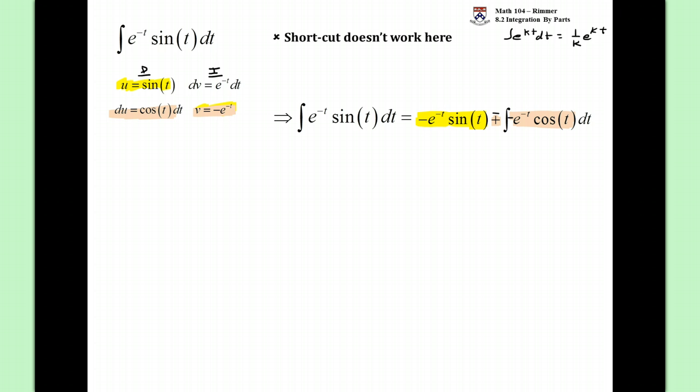So what do we do? We traded in e to the negative t sine t for the integral of, basically, e to the negative t cosine t. It doesn't seem like we've gotten anywhere. The integral of u dv is going to be u v minus the integral of v du. Just applying the formula, integration by parts.